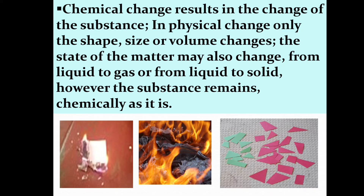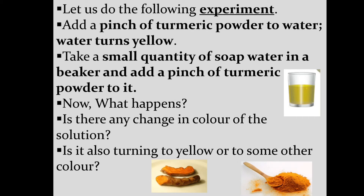In a chemical change, the result is a change of substance. Let us do the following experiment: add a pinch of turmeric powder to water — the water turns yellow. Now take a small quantity of soap water in a beaker and add a pinch of turmeric powder to it. What happens? Is there any change in color, or does it turn to some other color?